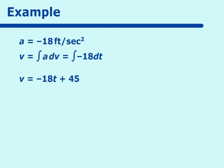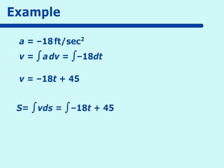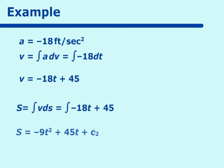They ask for the equation modeling the ball's distance from the ground. Distance S is the antiderivative of velocity. Taking the antiderivative, S equals negative 18T squared over 2 plus 45T plus C2, which simplifies to negative 9T squared plus 45T plus C2. Since the ball is thrown from 6 feet, S(0) equals 6, so C2 equals 6. The final equation is S equals negative 9T squared plus 45T plus 6.